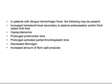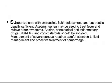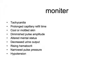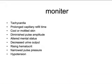These are the parameters to monitor daily in a suspected dengue patient. Treatment is supportive — analgesics are used, but avoid aspirin, NSAIDs, and corticosteroids. Fluid management is very important. If platelet count is dropping, FFP or blood transfusion may be given. Monitor for tachycardia, prolonged capillary refill time, cool or mottled skin, diminished pulse amplitude, altered mental status, decreased urine output, rising hematocrit, narrowed pulse pressure, and hypotension. If you are a resident and see a fever patient from an endemic area, suspect dengue and monitor carefully.